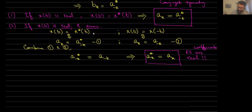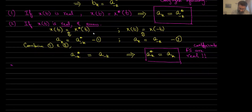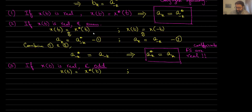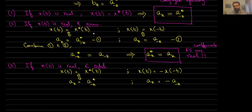That's the second implication. Now let's consider a third scenario where not only is the signal real, but it is also an odd signal. Because the signal is real, x(t) equals x conjugate of t. And because it's odd, x(t) equals minus x(−t). The real condition implies a_k equals a_{-k} conjugate, and the odd condition implies a_k equals minus a_{-k}, as you would have done already in one of the earlier exercises.